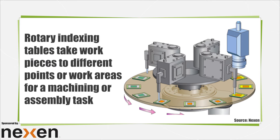Tables for rotary indexing are a special design for repetitive moves around the platform. Assembly, machining, and bottling machines all use indexers. Usually they take one piece around to work areas or move arrays of relatively small parts around stations for sequential machining or assembly tasks.